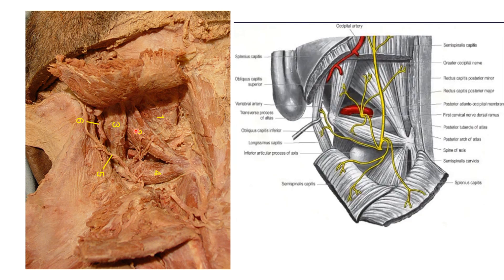The roof of the suboccipital triangle is formed medially by the semispinalis capitis muscle and laterally by the longissimus capitis muscle — both have been cut in this specimen so the roof is not visible. The greater occipital nerve crosses the inferomedial part of the roof of this triangle. After winding around the inferior border of the obliquus capitis inferior muscle, the greater occipital nerve then runs upward and medially along the roof of the suboccipital triangle. Superolaterally, the occipital artery crosses the superior lateral part of the roof, also passing upward and medially, resting on the obliquus capitis superior muscle.